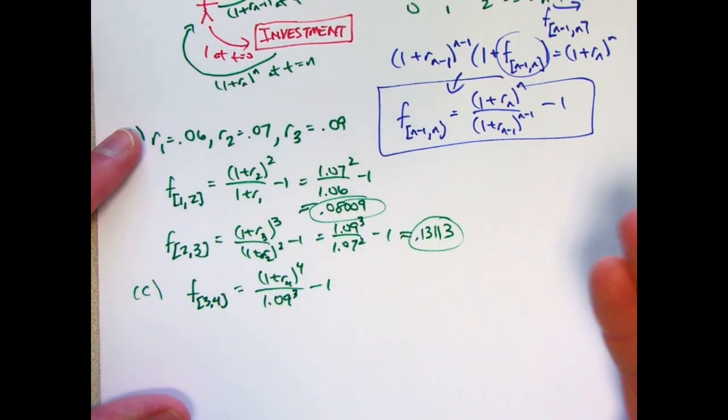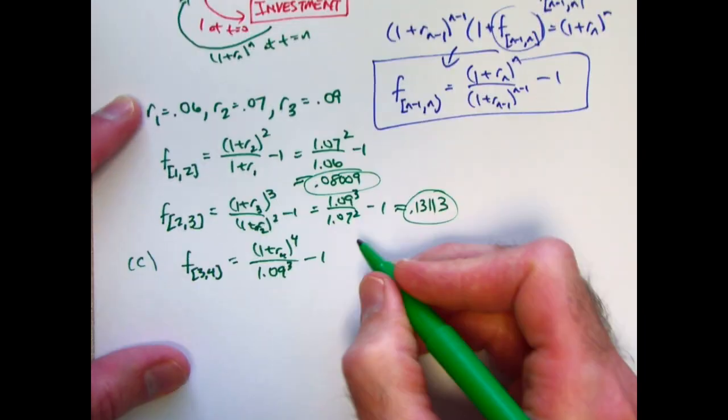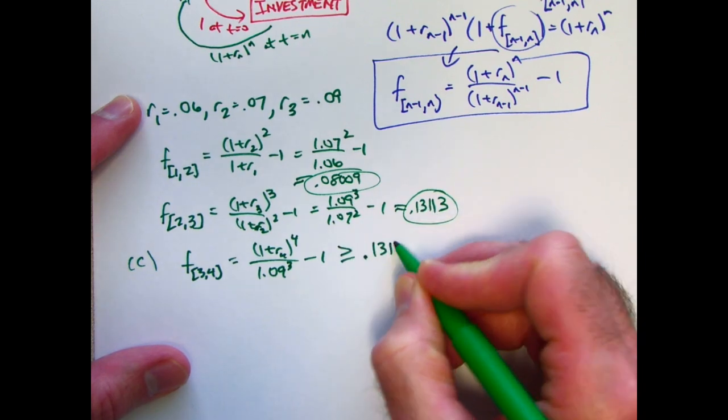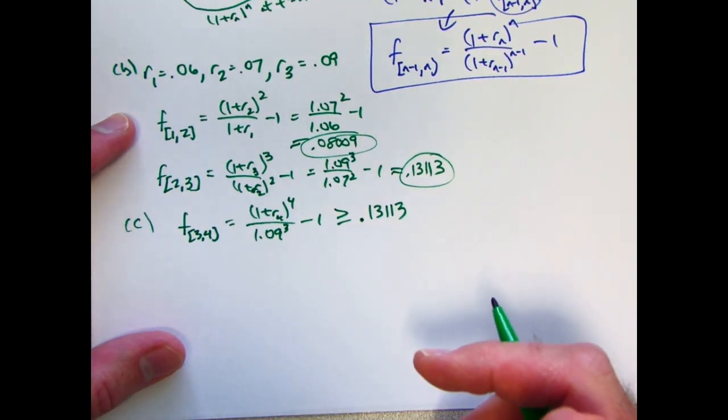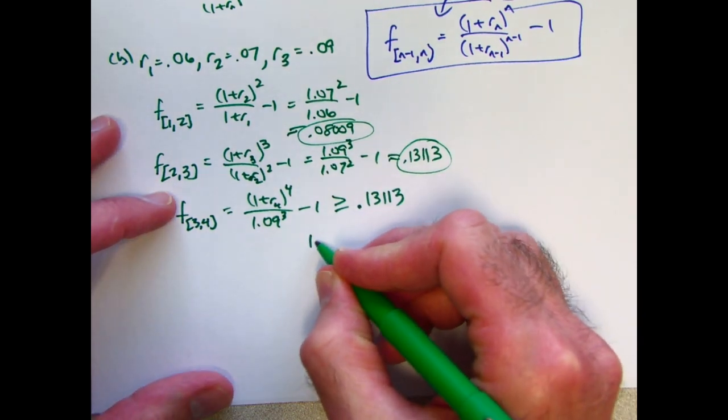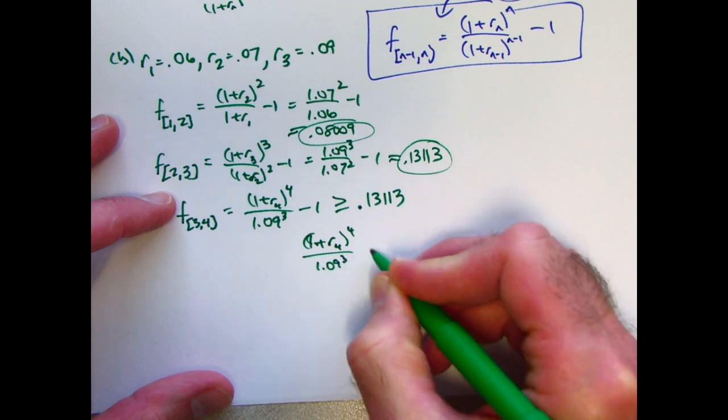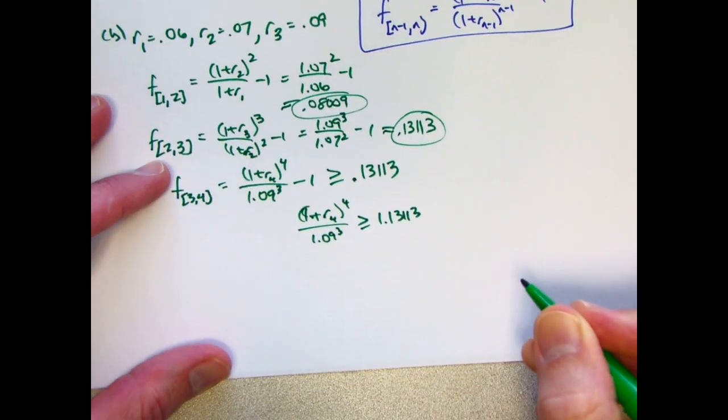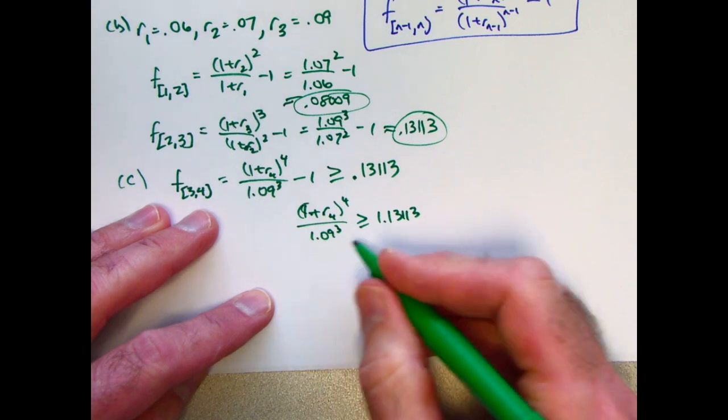Let's go ahead and do this as an inequality. We would like to find the minimum value of r4 so that this thing is greater than or equal to f23. I'll go ahead and use the approximation here, even though this is not going to give us an exact answer, give us close enough. Maybe I'll round r4 to just, say, three decimal places, or four. So, now we just solve this inequality. It's not too hard to do. And none of the operations we do to isolate r4 are going to change the direction of the inequality because they're going to all involve increasing functions. Add 1 to both sides. So, we get 1 plus r4 to the fourth power over 1.09 cubed is greater than or equal to 1.13113. Okay. The function x plus 1 is increasing, so the inequality stays the same direction.